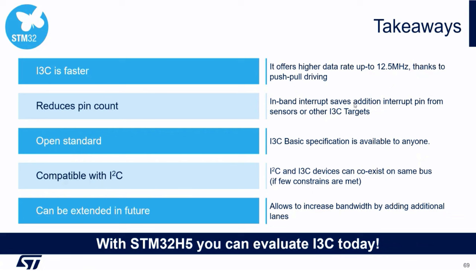To summarize the takeaways: I3C is faster — you can compare it to full-speed USB at maximum frequency. It reduces pin count because we can use in-band interrupts. It's a more open standard since the basic specification is available to everyone, so we may see easier market adoption. It's compatible with I2C with some limitations, and it can be extended in the future — applications needing more bandwidth can add more data lines or switch to double data rate.